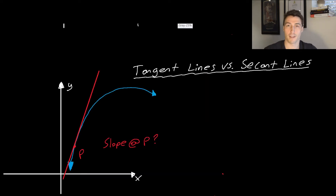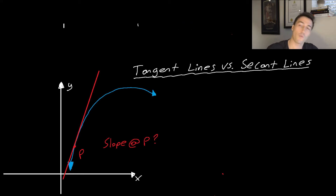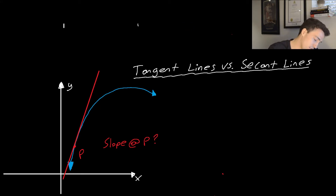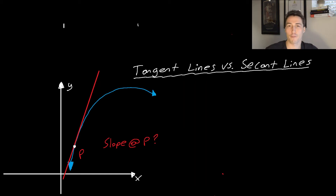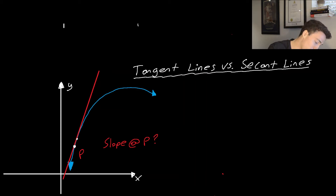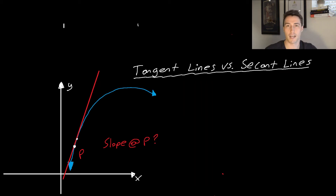Now that we know slope and what a tangent line is, finding the slope of a tangent line is actually a little bit more tricky, because we want the slope at exactly one point — at point P. We don't really have another reference point to relate to. We could maybe use a nearby point and find the slope there, with the smallest change in x possible — and that's kind of what we end up doing.